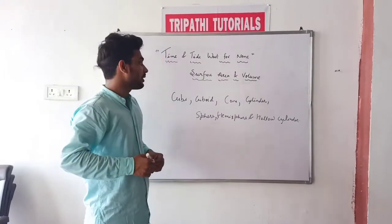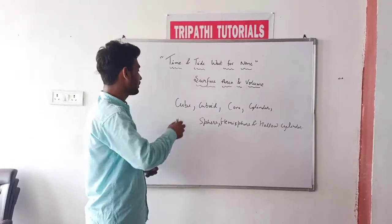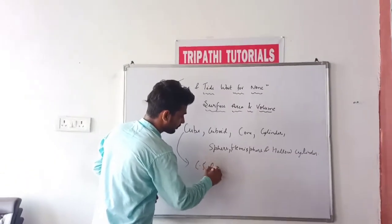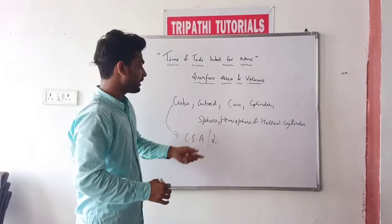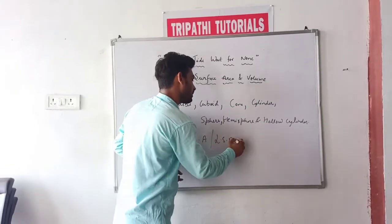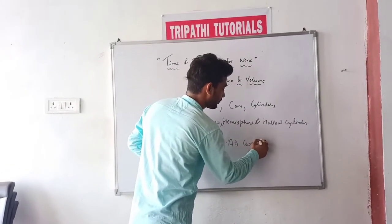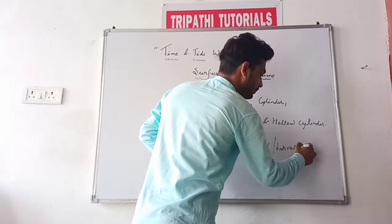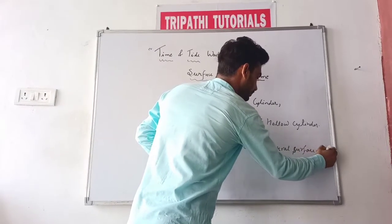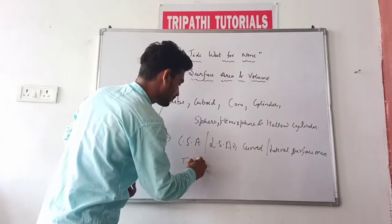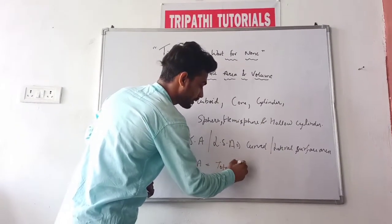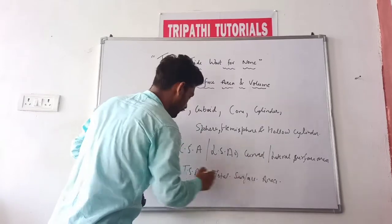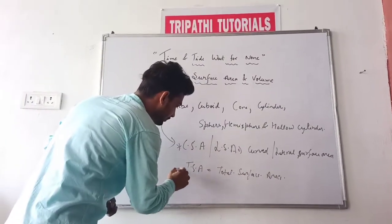In this chapter we will know how to find their CSA. CSA also has LSA - its full form is Curved Surface Area, or Lateral Surface Area. The second concept is TSA - Total Surface Area. And the third thing we discuss in this chapter is Volume.